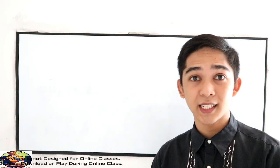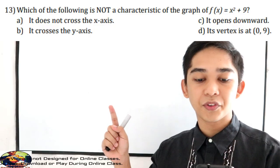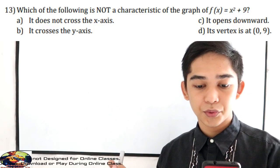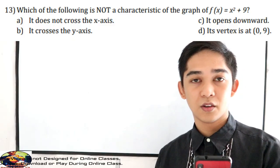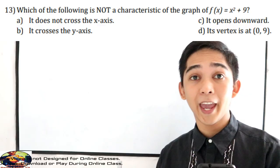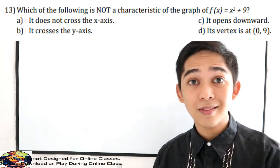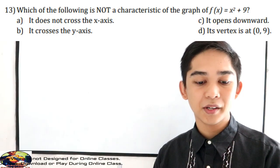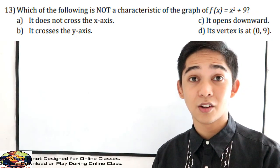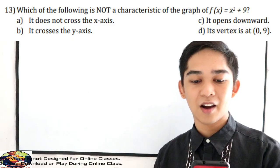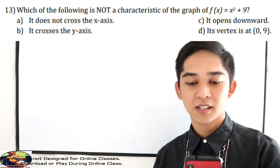For number 13, the question is: which of the following is NOT a characteristic of the graph of M of x equal to x squared plus 9? Our value of A is positive, so we know that if A is positive, the parabola opens upward. In number 13, the answer is letter C — it opens downward — which is NOT a characteristic of M of x equal to x squared plus 9.